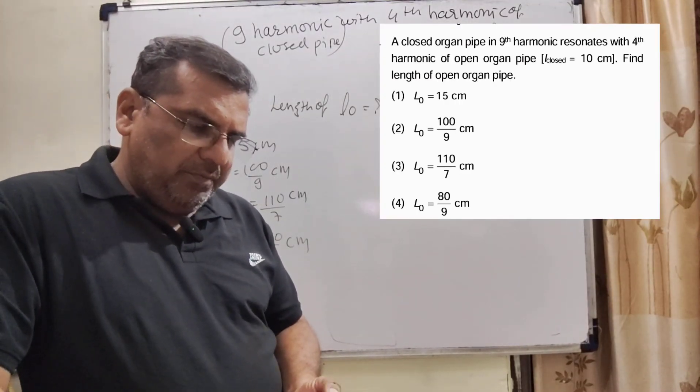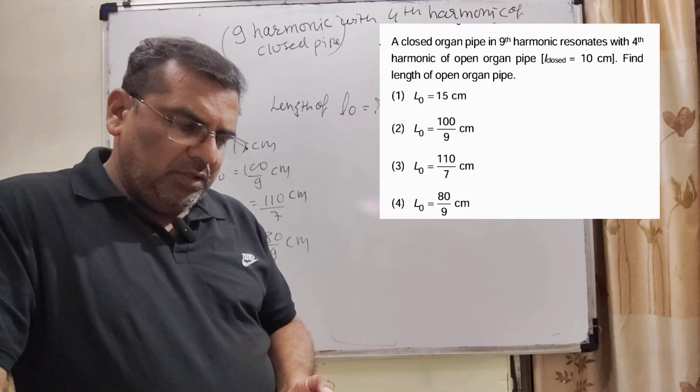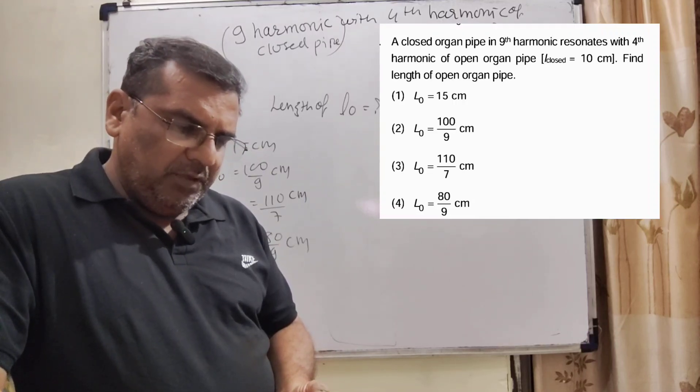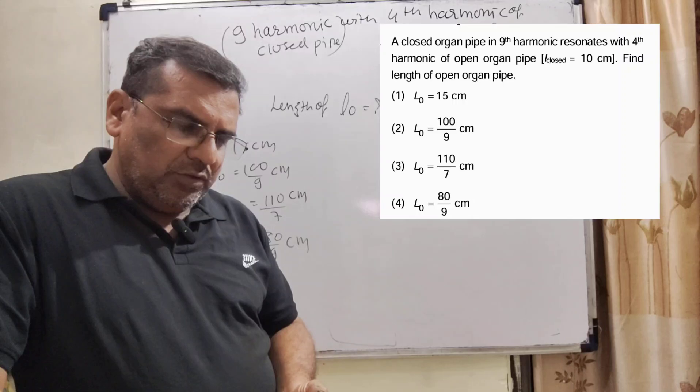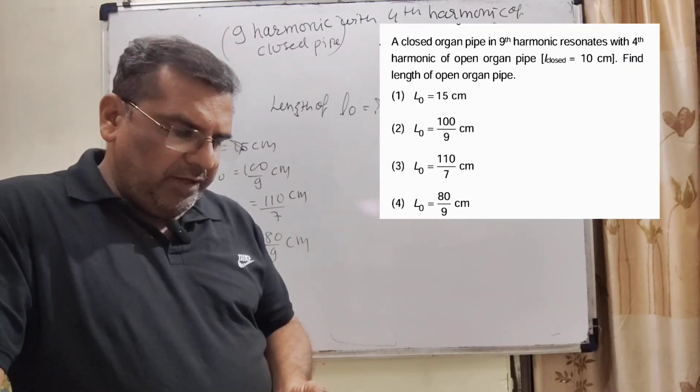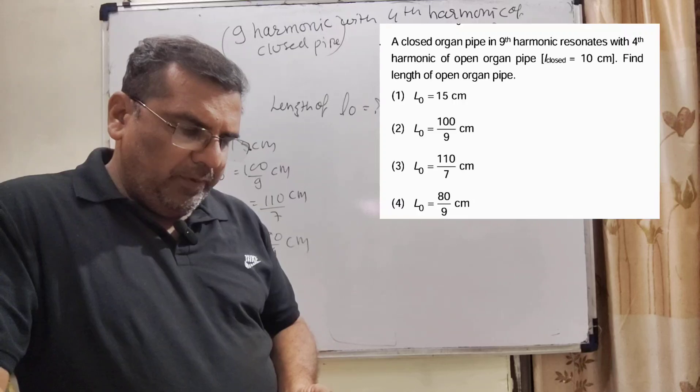A closed organ pipe in ninth harmonic resonates with fourth harmonic of open organ pipe. If length of closed organ pipe is given 10 cm, find length of open organ pipe.